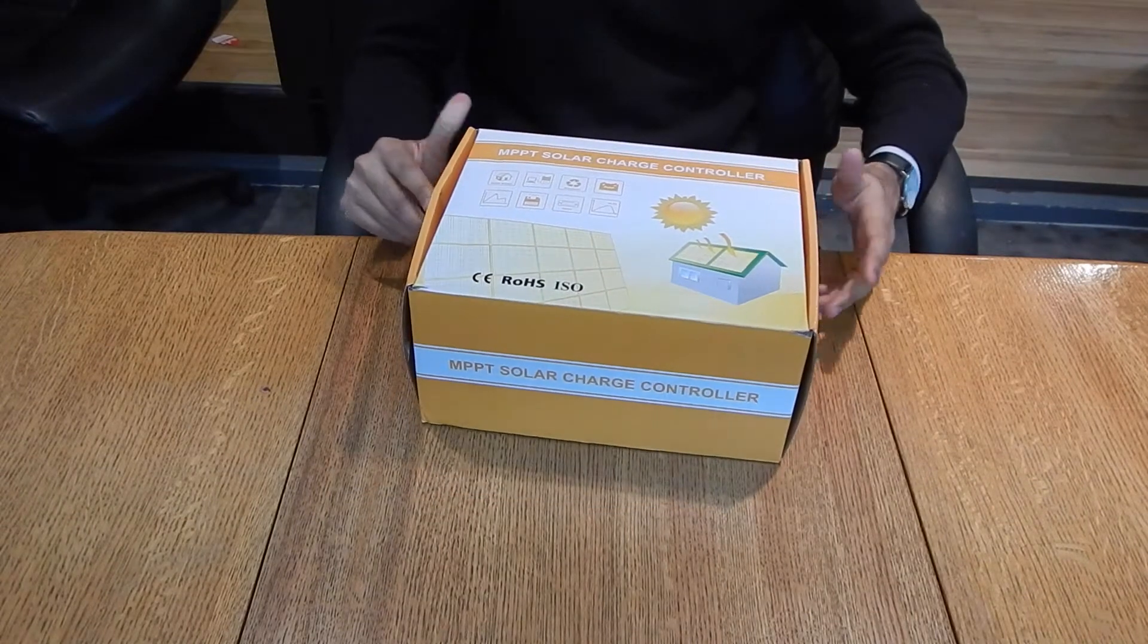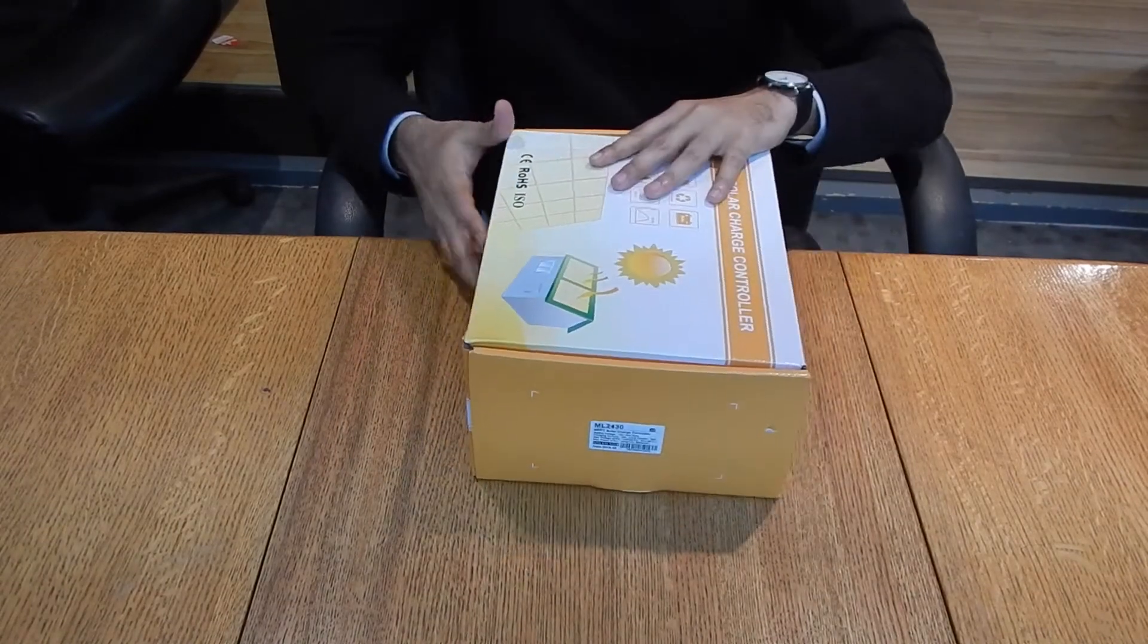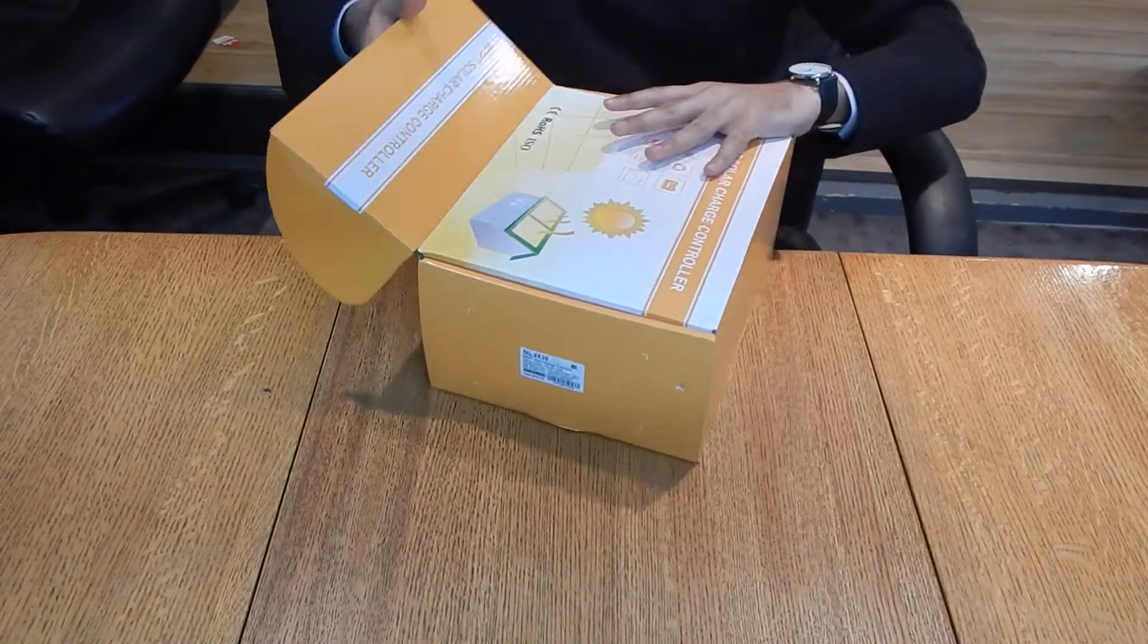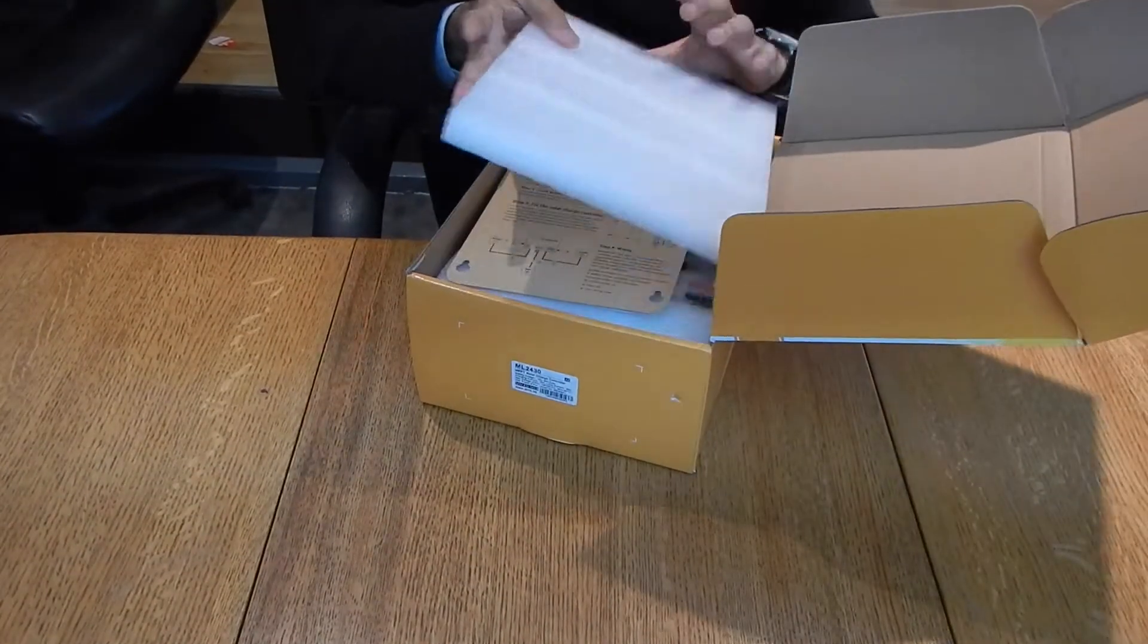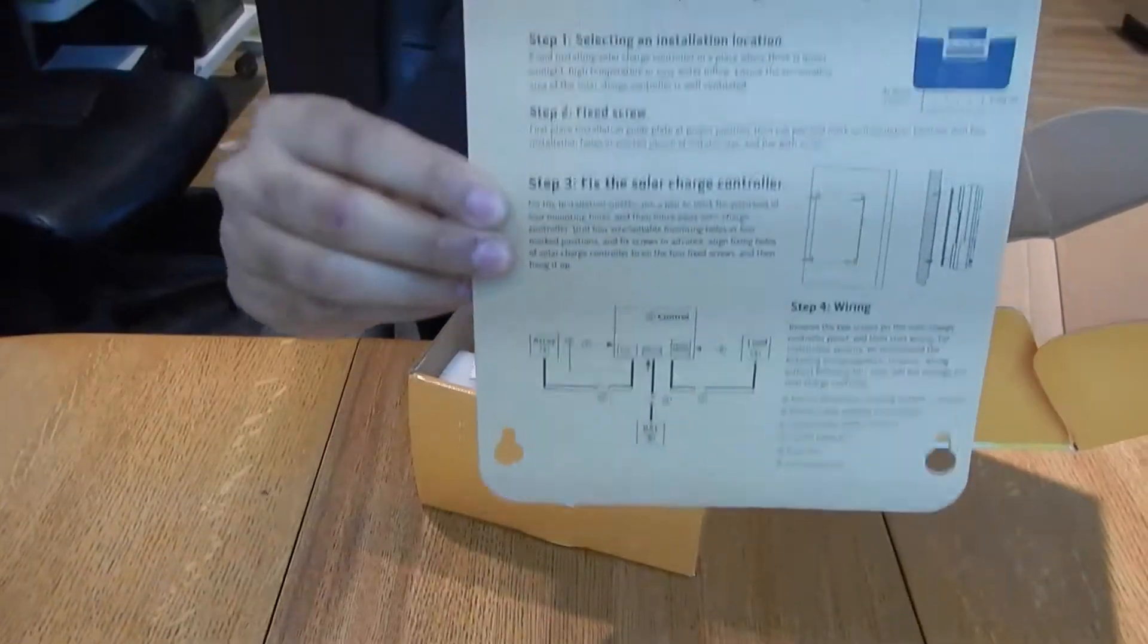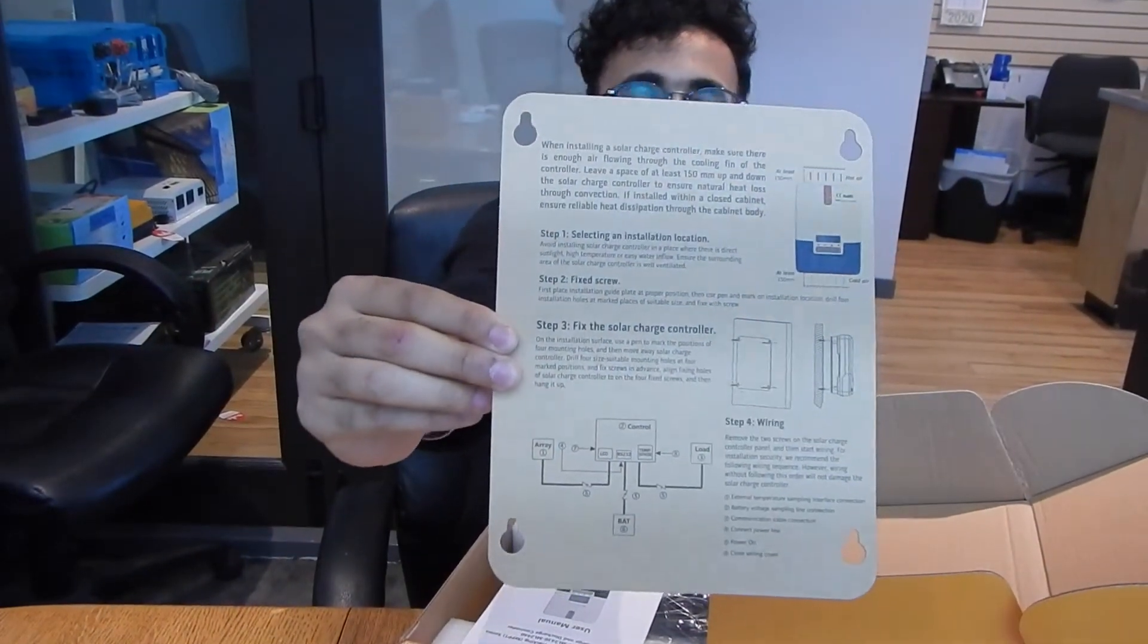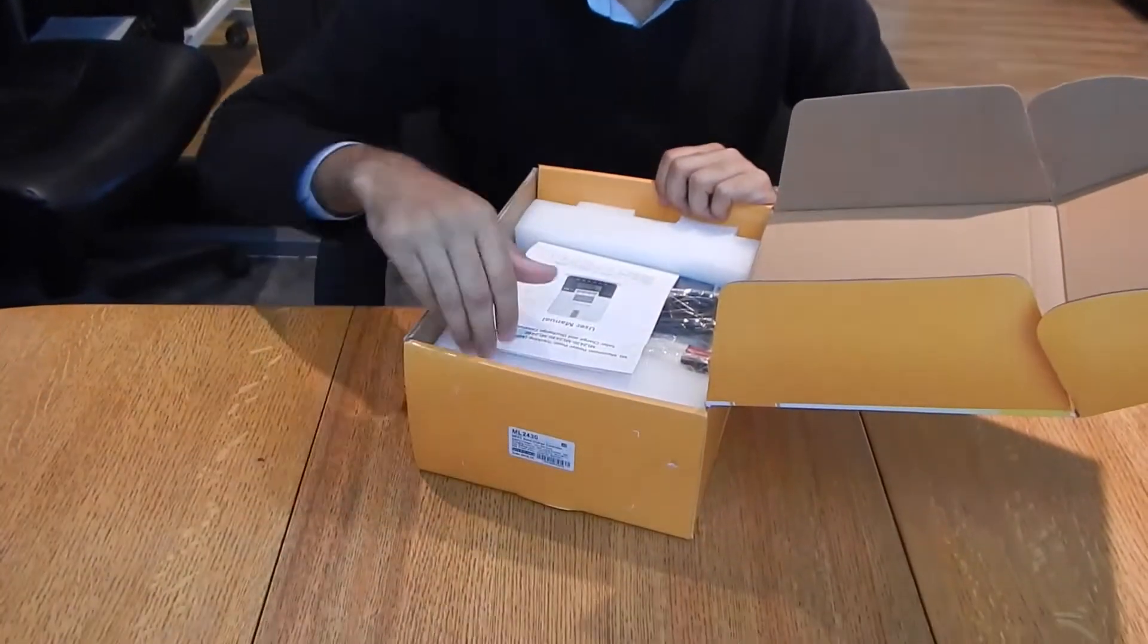Let's get into the unboxing and see what's inside. Right off the bat, we have some paperwork. Let me give you a close-up of that. Apart from the paperwork, you have the user manual itself.